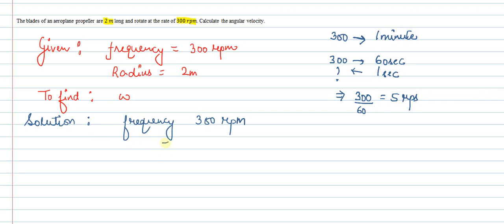Okay, so I can write down this frequency as 5 revolutions per second. Now we know in one revolution, the angle covered is 2 pi.